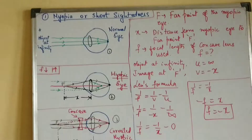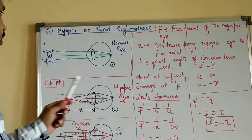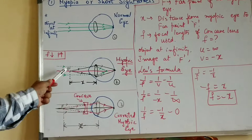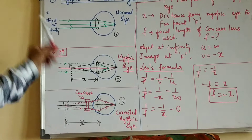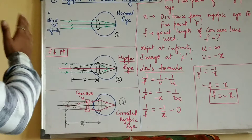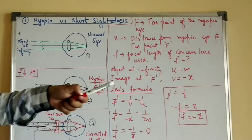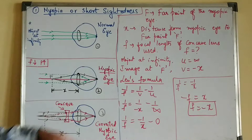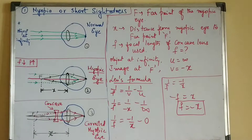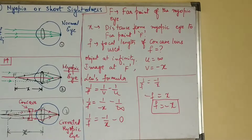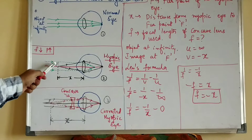Now let us do some mathematical analysis for myopia. Capital F is the far point of the myopic eye — the eye is capable of seeing the object at the far point, within it, but not beyond. Capital F itself is the principal focus of the concave lens. Let small x be the distance from the myopic eye to the far point capital F.